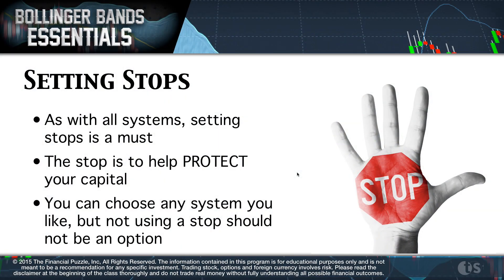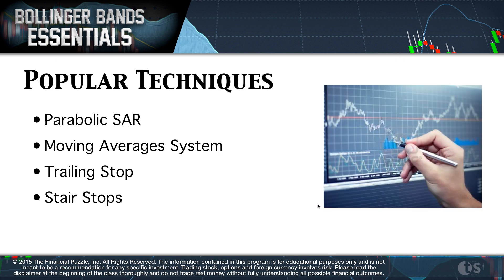You can choose any system you like — it really doesn't matter what stop system you use, but not using a stop system is simply not an option. It's a non-negotiable; you've got to use one. So let's talk about some popular techniques. One popular technique, especially with the Bollinger Band system, is to use a parabolic stop — parabolic SAR.